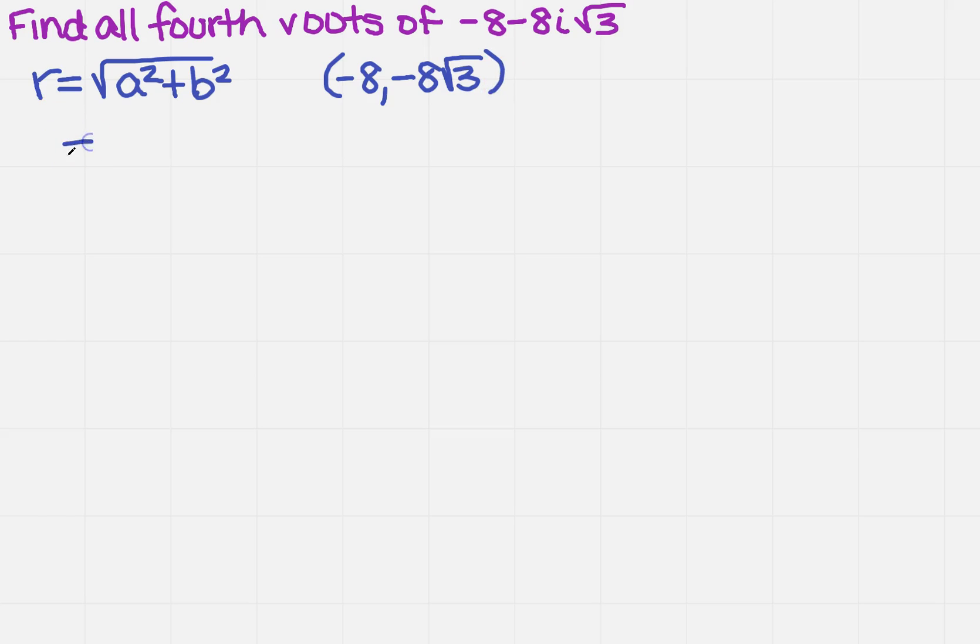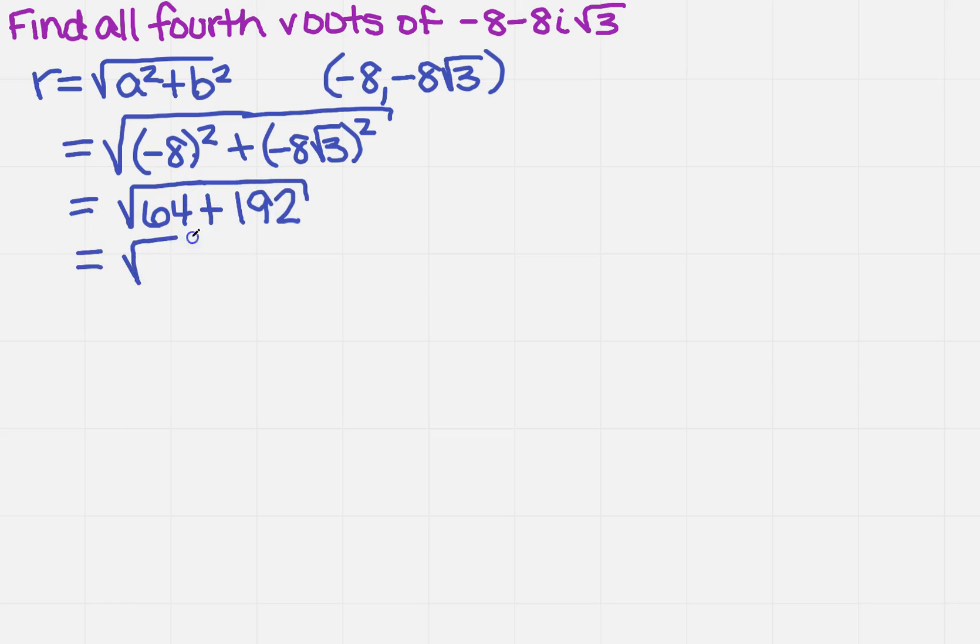So when I plug this in here, I'm going to get the square root of minus 8 squared plus minus 8 square root of 3 squared. And as I simplify this, I'm going to get the square root of 64 plus 192, which is simply the square root of 256.